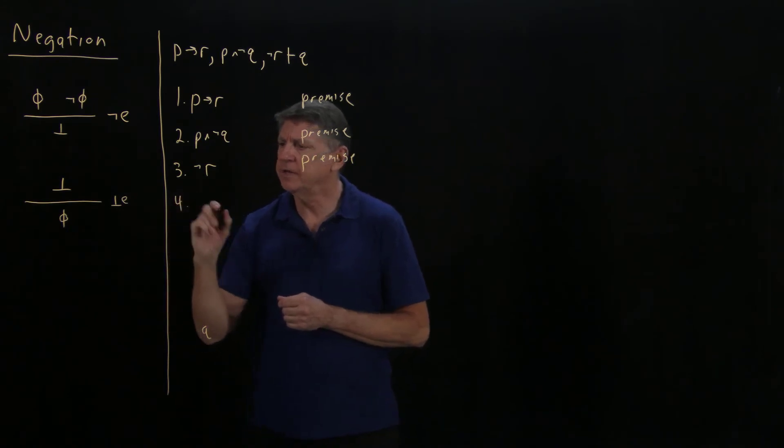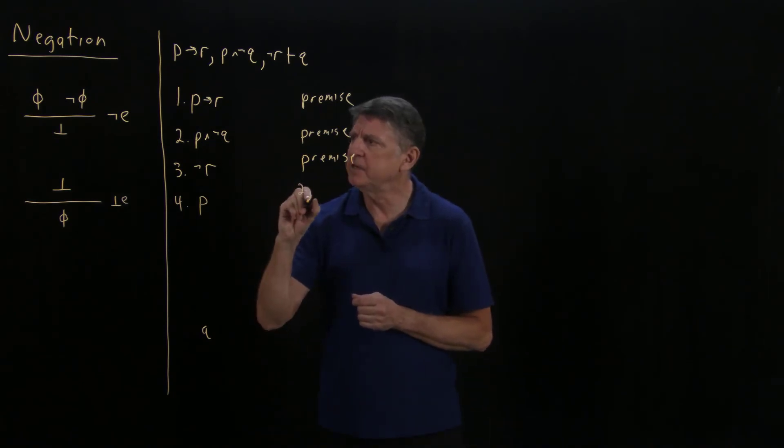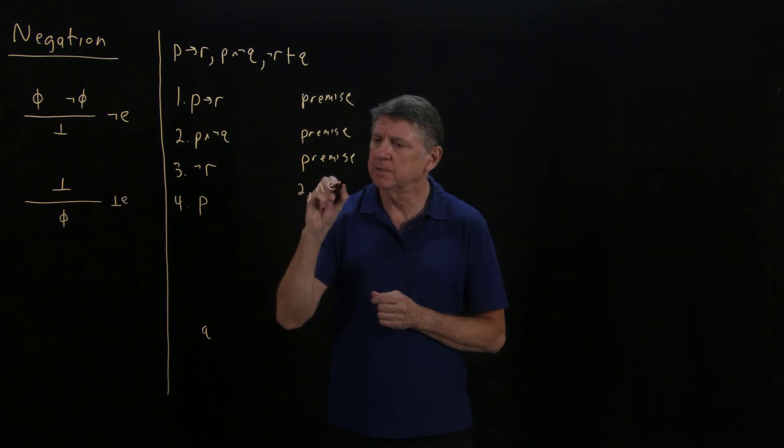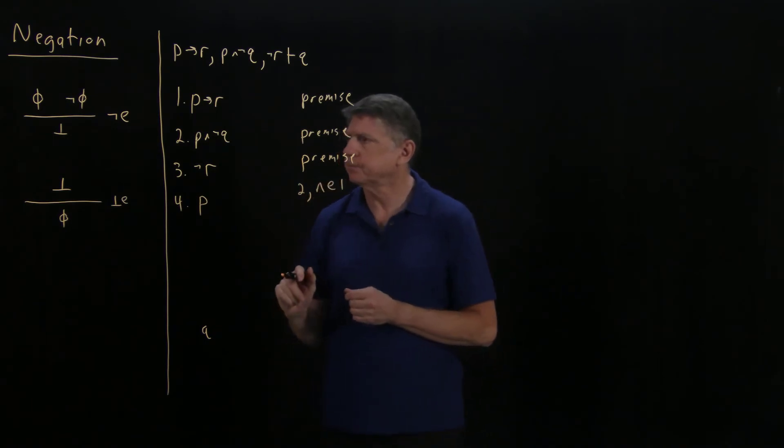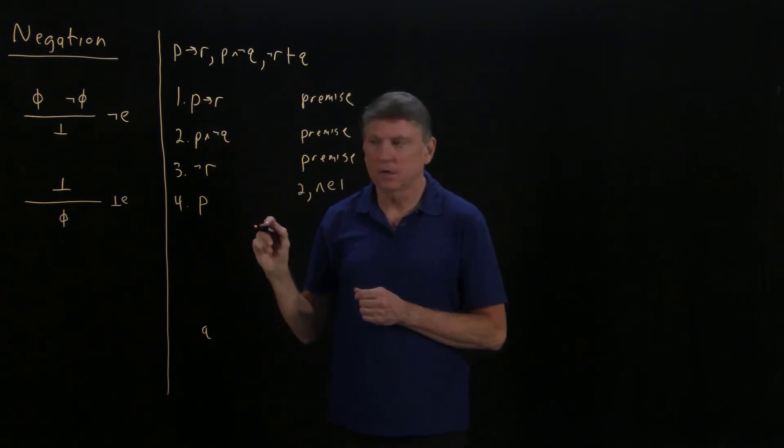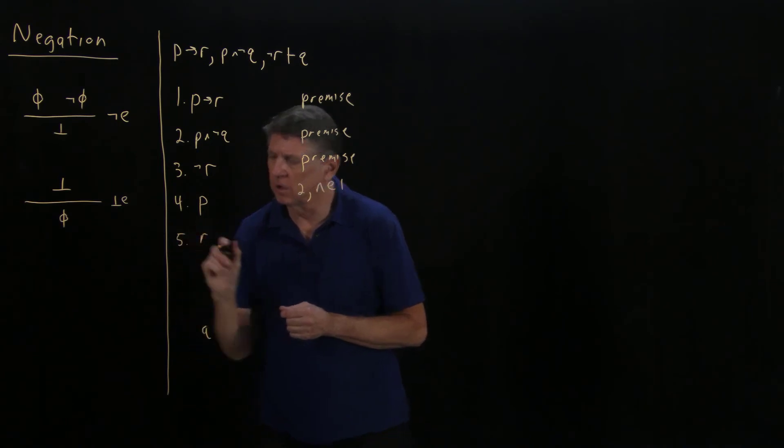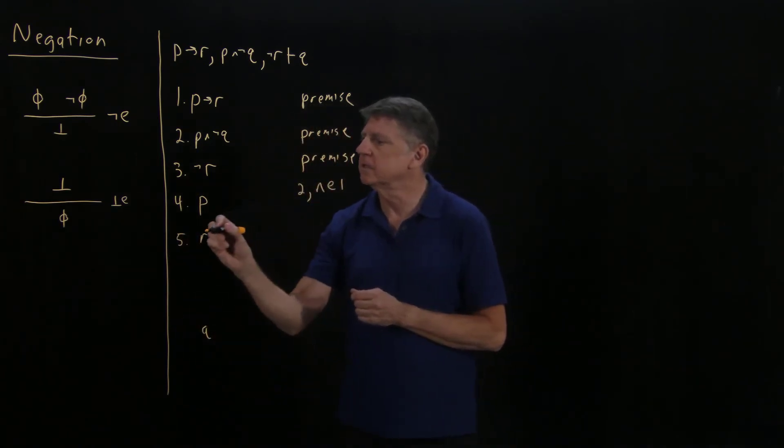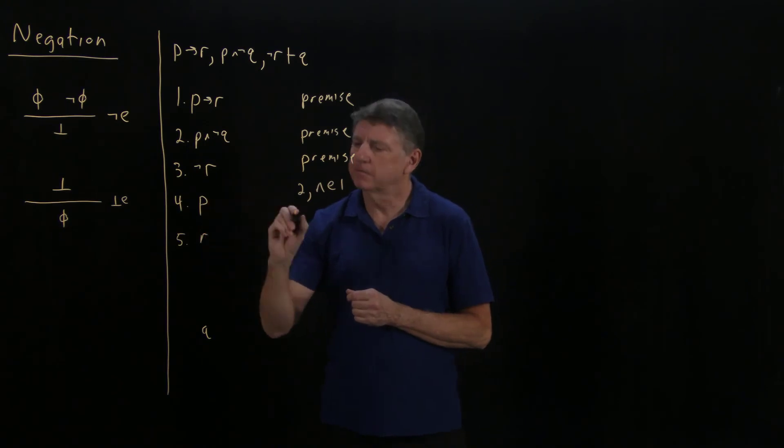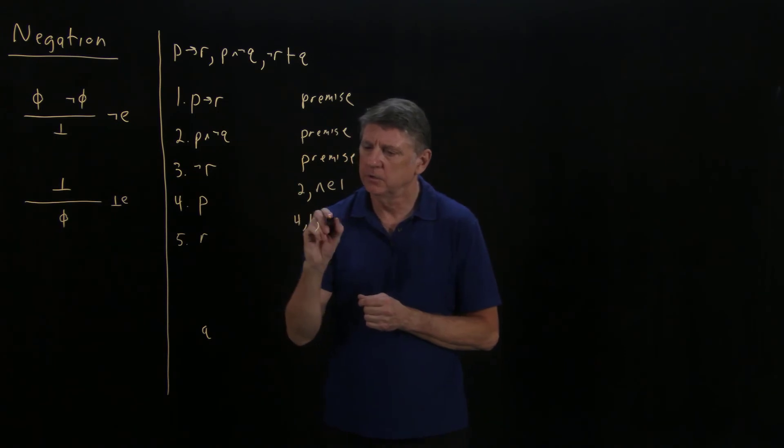Let's suppose that what I do is I conclude, I deduce P, and I do that from line two using conjunction elimination type one. From this and this, I could conclude R. So I could conclude that R is the case, and that would come from applying line four and line one using implication elimination.